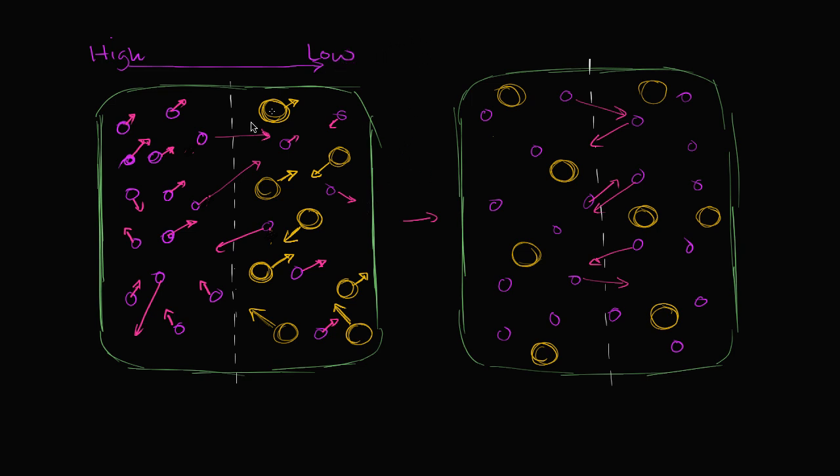And we saw what happened. Since you have more of these particles here, and they're all bouncing around in different directions randomly, you have a higher probability of things moving from the left to the right than from the right to the left.